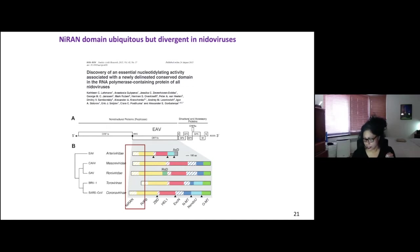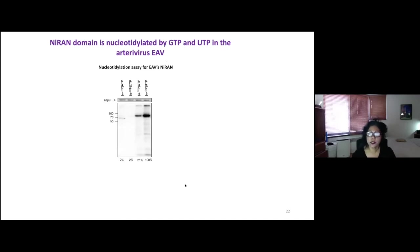But what they did show was that in a very nucleotide specific way, the NiRAN gets self nucleotidylated with GTP and UTP. This was done in the arteriovirus EAV.